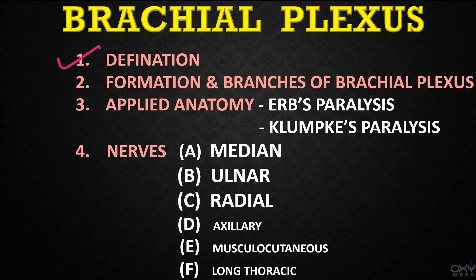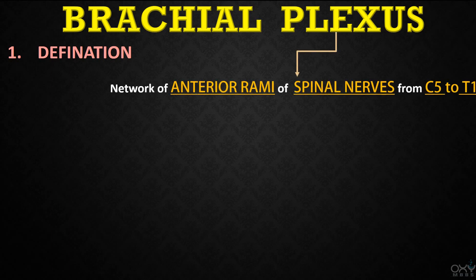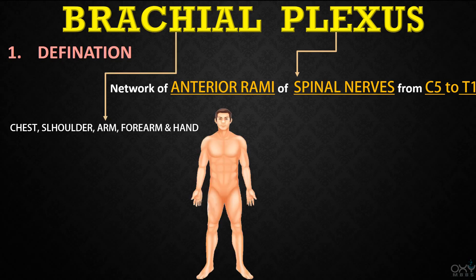What is the meaning of plexus? It is a group or network of anterior rami of spinal nerves, from segments C5 to T1. And what is the meaning of brachial? In general, the term brachial is used for the arm.